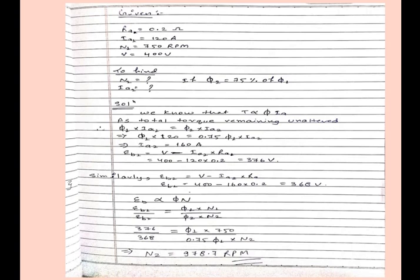So what given is Ra that is 0.2 ohm, that is our armature resistance. Ia1 armature current is 120 ampere, N1 equals 750 rpm, V equals 400 volt. What we have to find: N2 and Ia2 if our flux phi2 equals 75% of phi1.